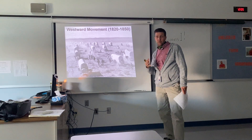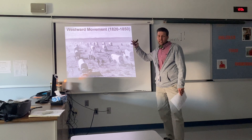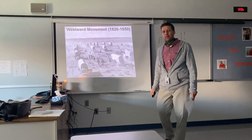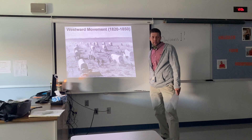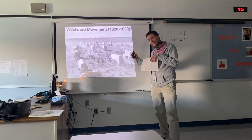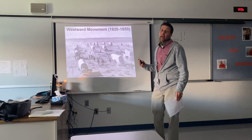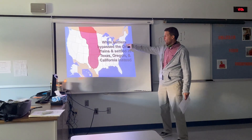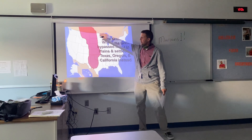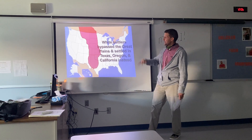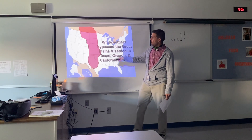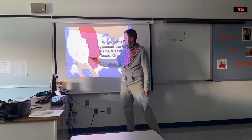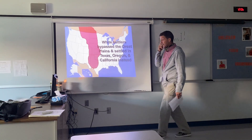We are starting our unit in the 1820s, talking about people wanting to move west. Why move west? It's pretty simple — people wanted a fresh start. The East Coast was getting very populated, and people heard stories and were looking for something new. White settlers are going to bypass the Great Plains — the area shown in red — and move toward three specific areas, including Oregon and California, which we're looking at today.